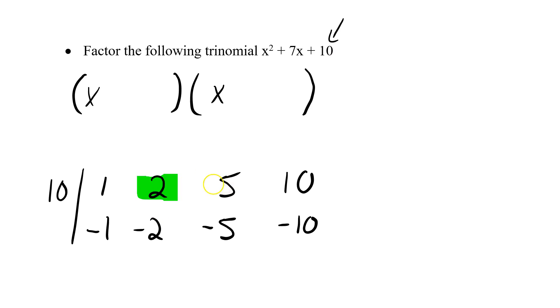Well, 2 and 5 give me 7. So this is a plus 2, this is a plus 5. I'll put plus 2 in the first, plus 5 in the second. So when I factor my trinomial I've got x plus 2, x plus 5.